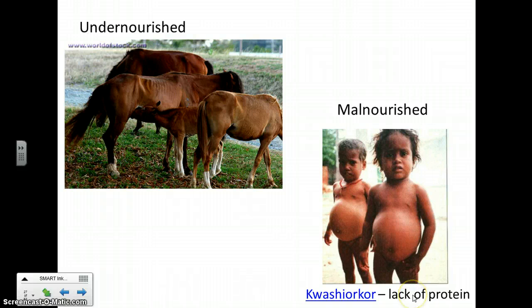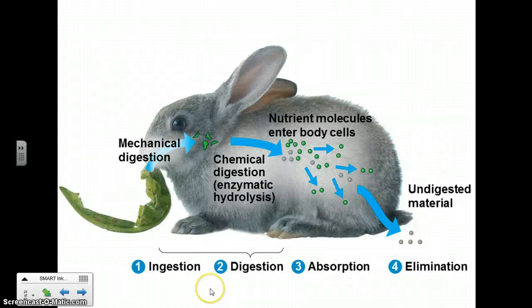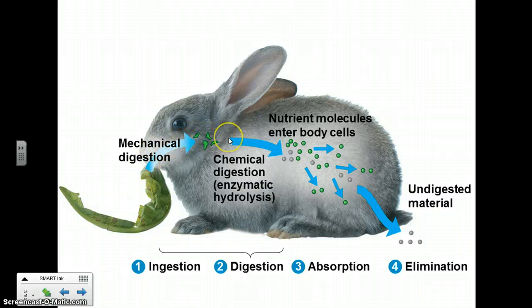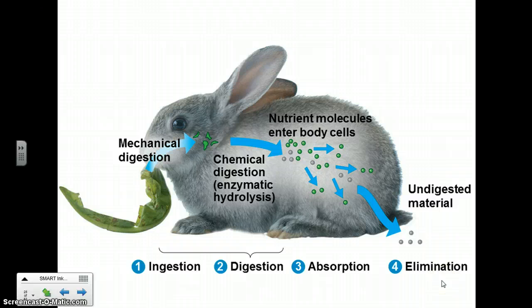In the process of taking in foods, we have to do several things. First, you have to take it in — you have to eat it. Then you begin chemical digestion, breaking it down, in addition to mechanical digestion like chewing. Then you have to absorb those digested nutrients, and finally get rid of the waste — things you don't digest. Those are the steps: ingestion, digestion, absorption, and elimination.